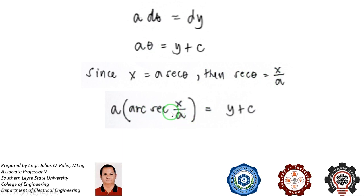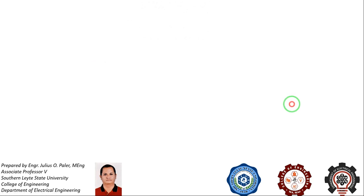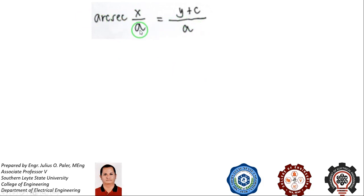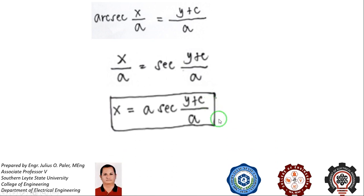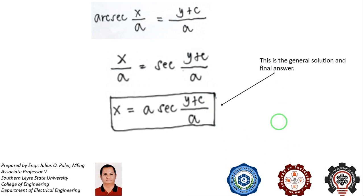Substituting theta for arc secant of x over a, multiplied by a, equals y plus c. Dividing the entire equation by a gives arc secant of x over a equals y plus c, all over a. Simplifying further, x over a equals secant of y plus c over a. Solving for x, we have x equals a secant of y plus c all over a.